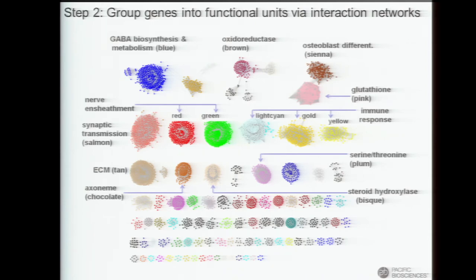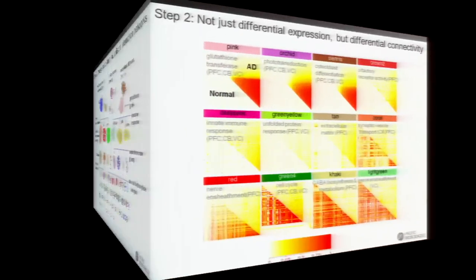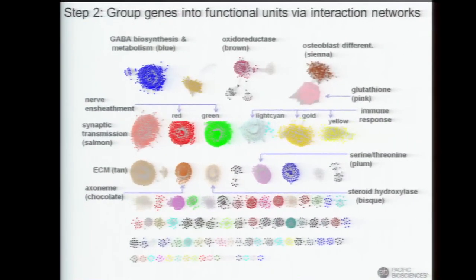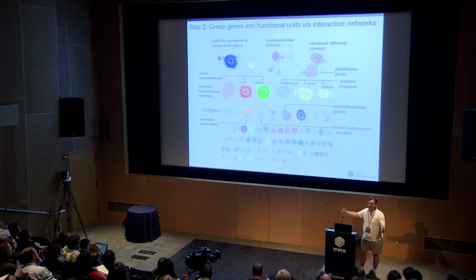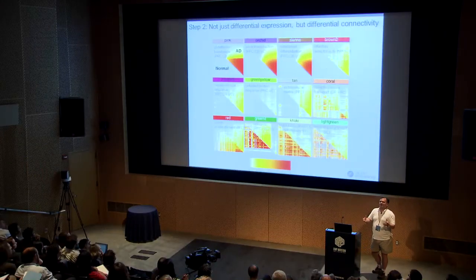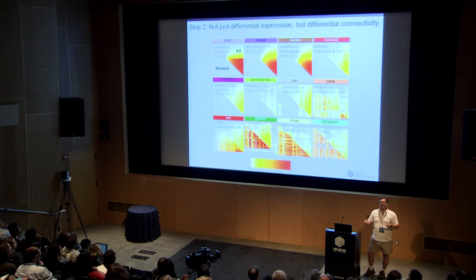Here are all the different blocks of functional units that break out of that. Now we want to leverage DNA variation information as the perturbation source. Before we do that, I wanted to highlight that one of the fundamental things we've been trying to uncover isn't just differential expression between Alzheimer's disease and control, but differential connectivity — how the topology of these networks is changing. We find genes that may not be differentially expressed between conditions, but how they're plugged into the network changes dramatically.